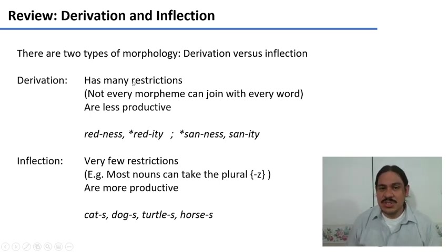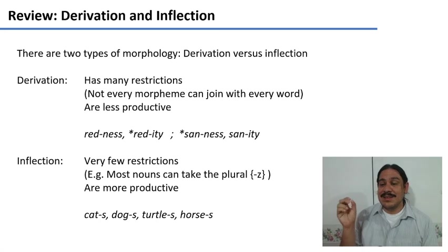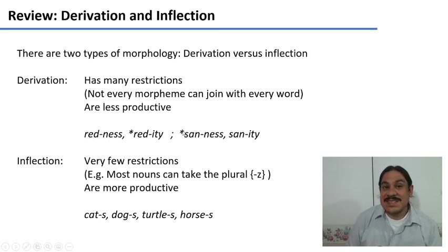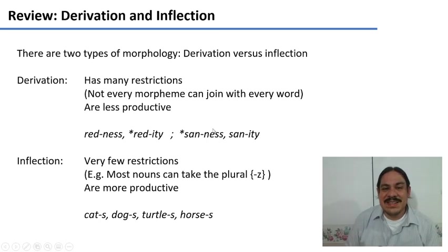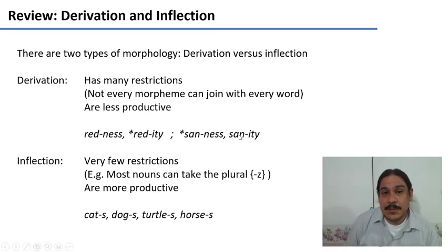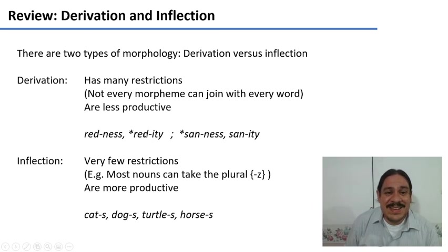Derivational morphemes have many restrictions on what kinds of roots they can attach to — not every morpheme can join every word. For example, the suffix '-ness' can join an adjective like 'red' to create 'redness.' But if we try 'sadness' with '-ness' on 'sane,' that doesn't work — 'saneness' is not standard. On the other hand, the derivational suffix '-ity,' which also conveys the abstract quality of an adjective, gives us 'sanity.' But we cannot say 'redness' using '-ity' — we can't say 'redi­ty.' So this morpheme also has restrictions on where it can attach.